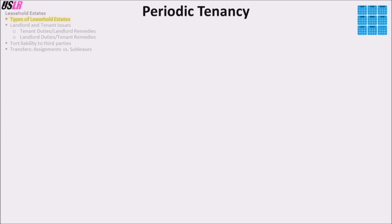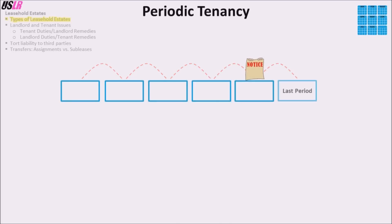The periodic tenancy, also known as the tenancy from year to year, month to month, or week to week, continues from period to period and ends after notice of termination. Either the tenant or the landlord can give notice to terminate. At common law, the notice had to be given at least one period before termination, unless the period was for more than one year, in which case six months was sufficient. The notice must state the date of termination, which must be on the last day of the payment period.